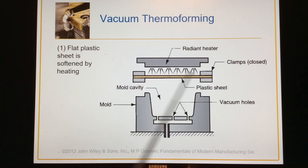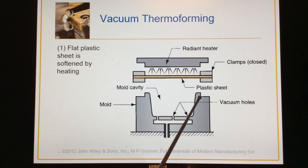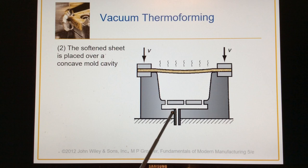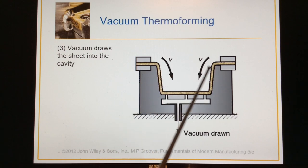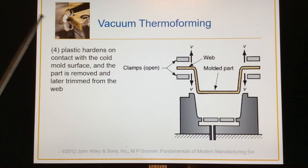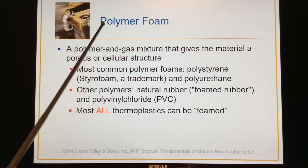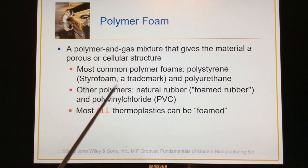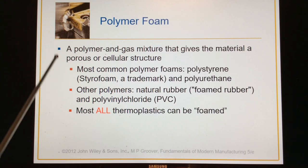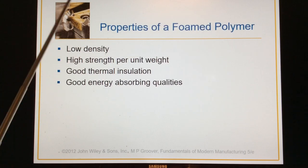Vacuum thermoforming uses a plastic sheet that gets heated and becomes very pliable. It's placed over a mold, a vacuum is applied, and it sucks through, conforming to the mold shape — giving you a molded part pretty rapidly. All thermoplastics are also capable of being foamed, and because of that, you get a wide range of different densities in foamed products, especially for packaging applications.